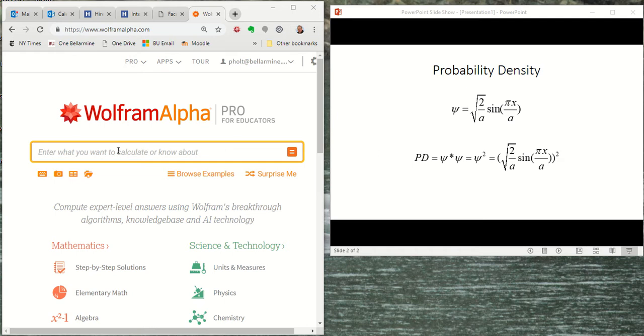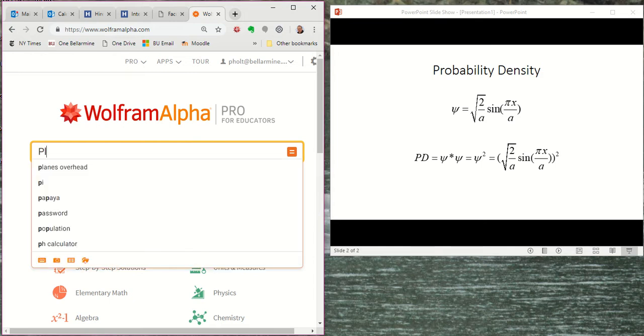All right, so now we move over to Wolfram Alpha. So how do we do this? Well, first of all, we're going to plot. So I'm just going to type plot here for that. And now I'm going to type in my wave function.